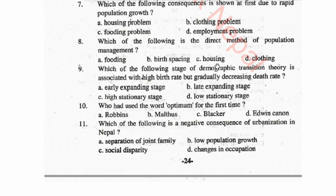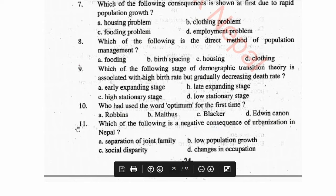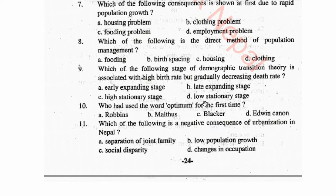Options: food, birth spacing, housing, clothing. Question 9: Which of the following stages of the demographic transition theory is associated with high birth rate but gradually decreasing death rate? Options: early expanding stage, late expanding stage, high stationary stage, low stationary stage. Question 10: Who first used the word 'optimum'?